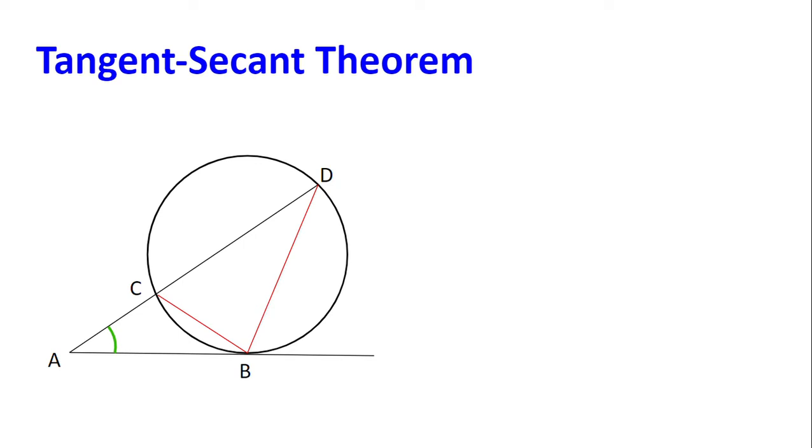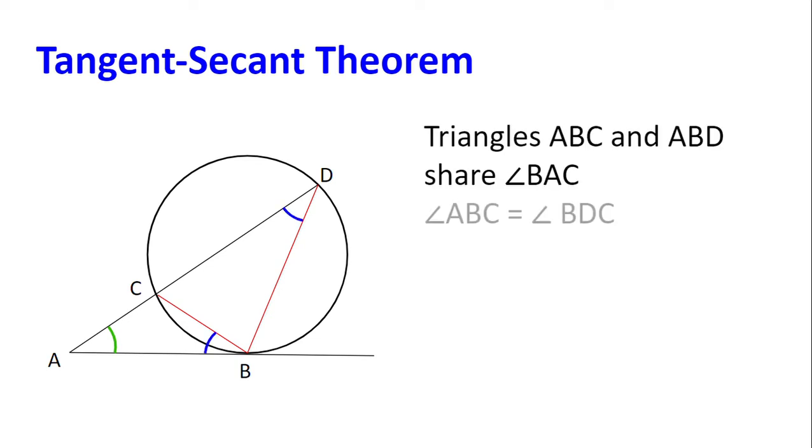Another thing we can notice is that angle ADB is equal to the angle ABC by the alternate segment theorem. Now, looking back at the triangles again, we find that they both have two pairs of equal angles, and so they must be similar.